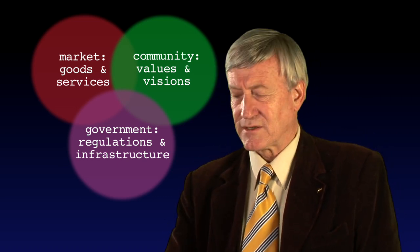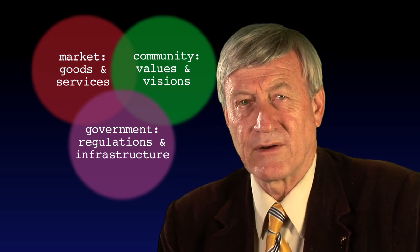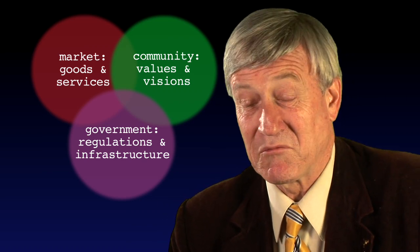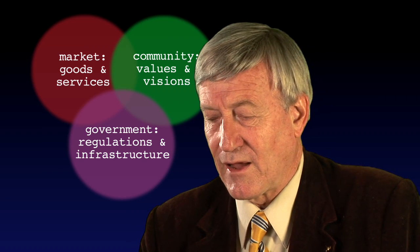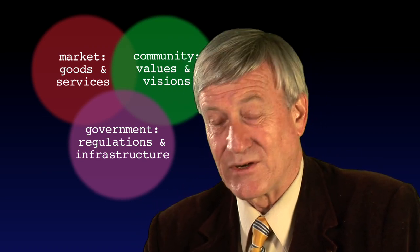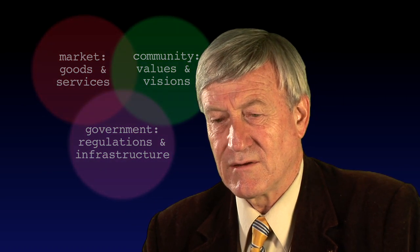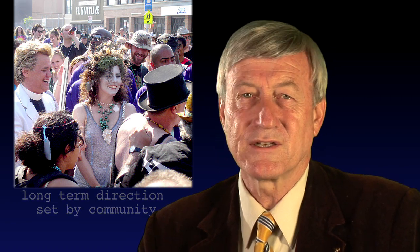Governments get involved in regulations and infrastructure — that's their key role. They don't actually set long-term directions, however. They tend to have a timeframe roughly from one election to the next, maybe ten years at maximum. The market's timeframe is usually less than six months — the next financial year is about as long as it goes. Generally it's very short-term. The long-term sustainability issues are really about long-term concerns, and these values and visions are set by the community. There is no way that the market or government can do that. If the community is not doing it, sustainability can't work — it is constantly being pushed and prodded by community values and visions.